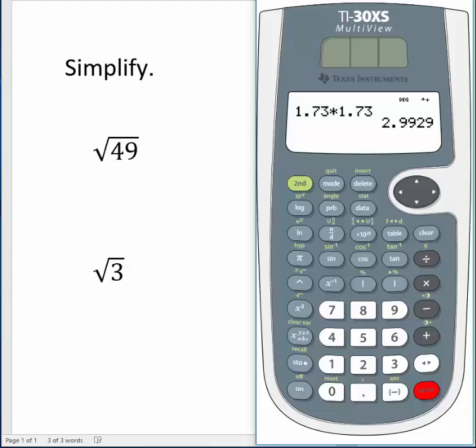So this is okay, because 1.73 was just an approximation. So the square root of 3 really is about 1.73.